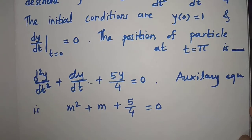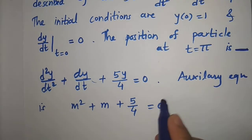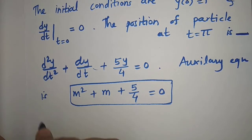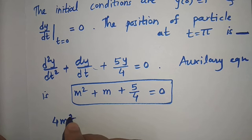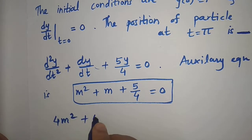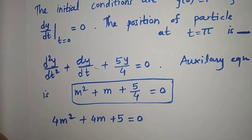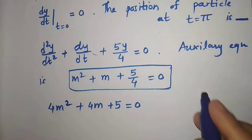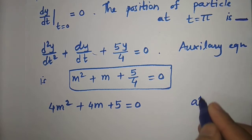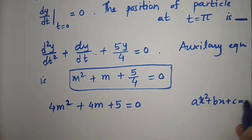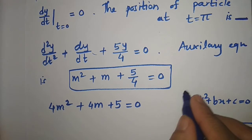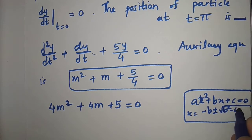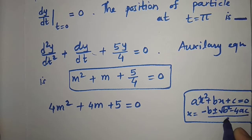We need to find the roots m of the auxiliary equation. Multiply through by 4 to get 4m² plus 4m plus 5 equal to 0. Compare with ax² plus bx plus c equal to 0. The roots are given by x equal to minus b plus or minus root of b² minus 4ac, divided by 2a.